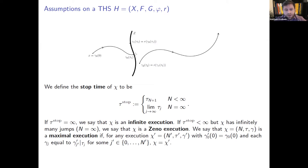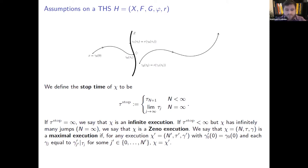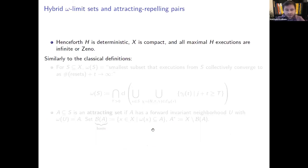If a maximal execution can proceed for infinite time, it is called infinite. If infinitely many resets happen in a finite amount of time — as in a common model of a bouncing rubber ball — the execution is called Zeno. Going forward, the assumption is that all maximal executions are either infinite or Zeno.